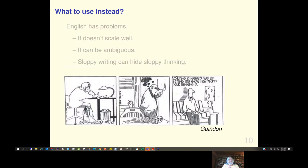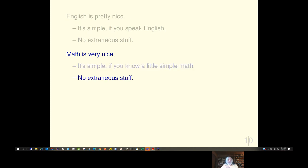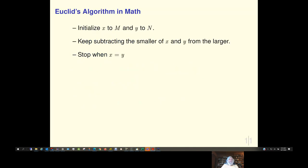Now, my modification of Gwenden's cartoon is that math is nature's way of letting you know how sloppy your writing is. So, English is pretty nice. But math is very nice. It's simple, if you know a little simple math. There's no extraneous stuff. And it's been refined over many centuries by many very smart people. So, it's a really cool language. So, write Euclid's algorithm in math.